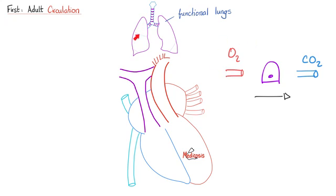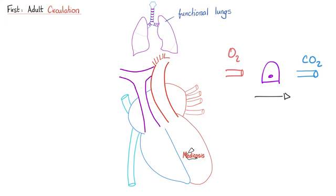This lovely oxygen is going to go to the blood and end up in the pulmonary veins — two from the right lung, two from the left lung. Eventually they end up in the left atrium. Now the left atrium contains oxygenated blood.